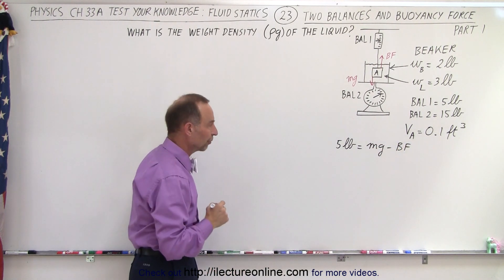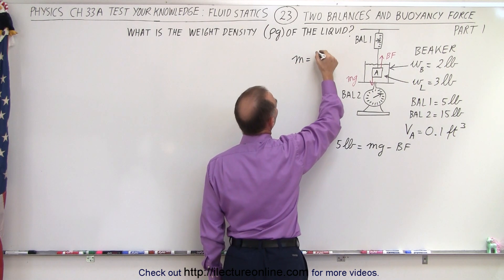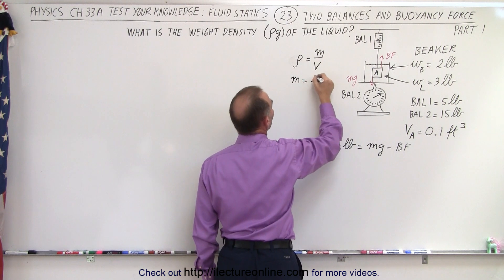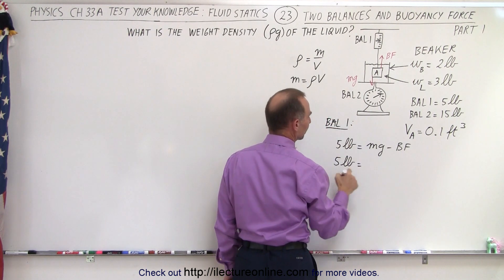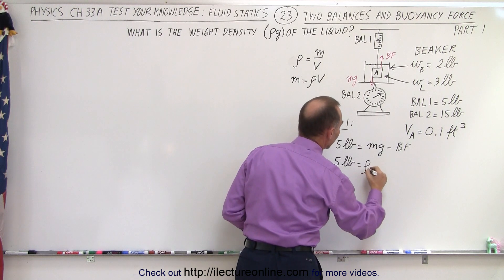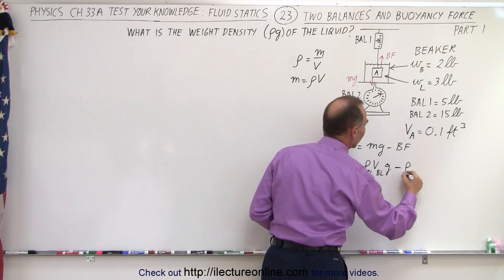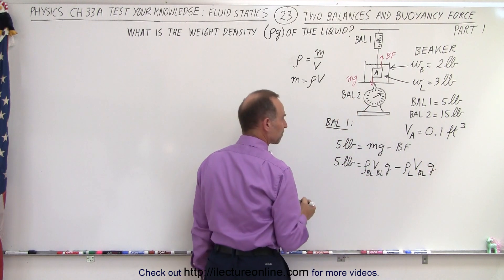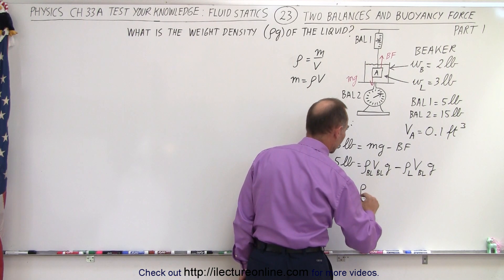Let's work with that equation first. The weight of the block can be written using density: mass equals density times volume. So five pounds equals the density of the block times the volume of the block times g, minus the buoyancy force, which is the density of the liquid times the volume of the displaced liquid (same as the volume of the block) times g.